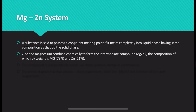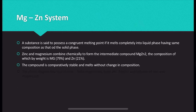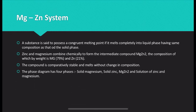This is a congruent melting point system. Zn and Mg combine chemically to form an intermediate compound MgZn₂. In a eutectic system such as lead and silver, the two components are only mixed together and do not form any intermediate compound — that is why it is called a simple eutectic system. But here, in the congruent melting point system, Zn and Mg combine chemically to form an intermediate, and the compound is comparatively stable and melts without change in composition. This phase diagram has four phases: solid magnesium, solid zinc, intermediate MgZn₂, and a melt of zinc and magnesium.